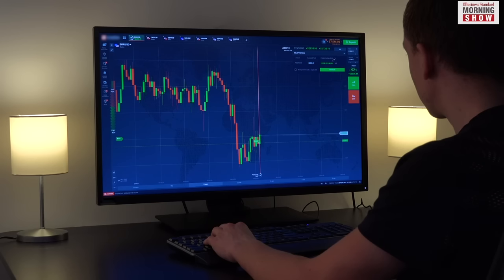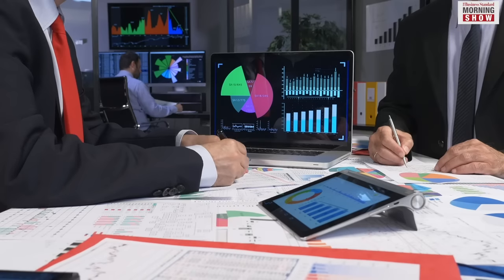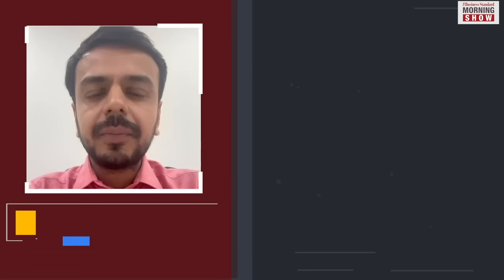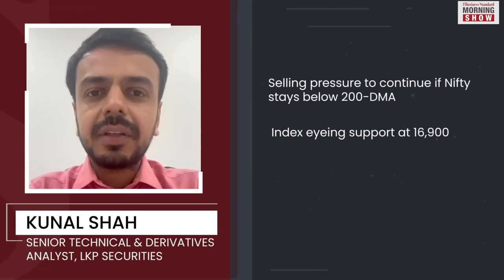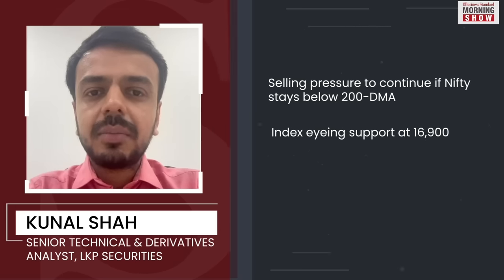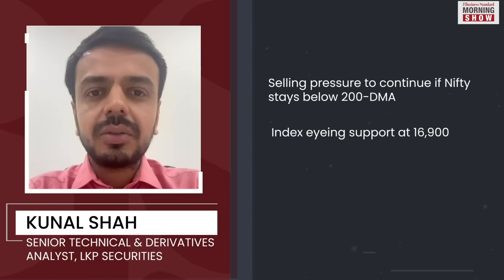Analysts believe the overall trend for the index remains negative, and as long as it stays below the 200 DMA, selling pressure will likely continue. Nifty has breached the 200 DMA. The 200 daily moving average is placed at 17,462. As long as we stay below these levels, expect the selling pressure to continue.